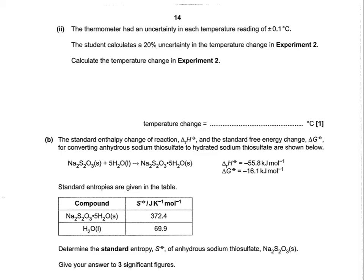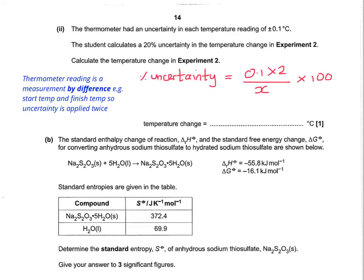So the next part is about percentage uncertainty. So the thermometer had an uncertainty in each temperature reading of plus or minus 0.1 degrees C. And it's important to remember that thermometer readings are measurements by difference. So there's a start temperature and a finish temperature. So the uncertainty is applied twice. So the mathematical idea is that you're trying to work out the temperature change. So therefore, that's going to be x. Now it says that the student calculates a 20% uncertainty. So we can put 20 in there. Now if we multiply it up by 100 on the left hand side, that allows us to get rid of the times 100 on the right hand side. So that now means 0.2 is equal to 0.1 times 2 over x. So therefore, x must be 1 degrees Celsius.